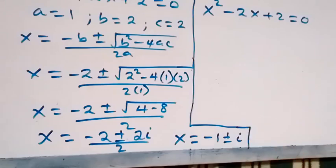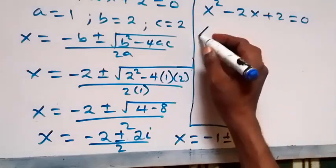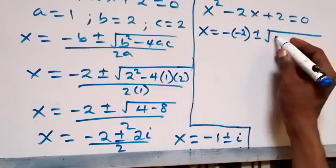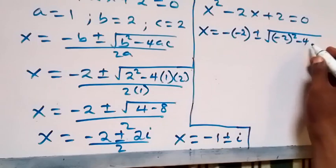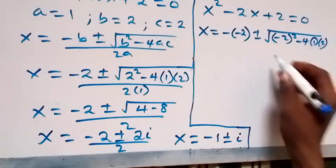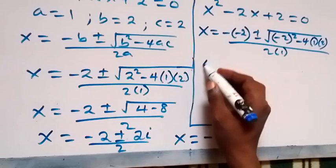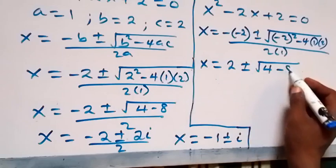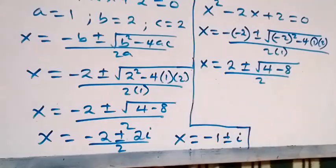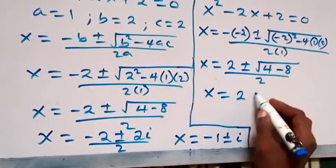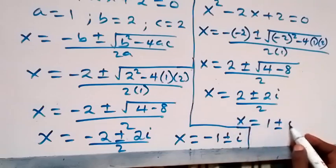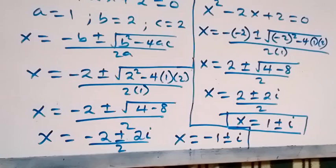On the other side, solving the second equation: x equals minus minus 2 plus or minus square root of minus 2 squared minus 4 times 1 times 2, divided by 2 times 1. So x equals 2 plus or minus square root of 4 minus 8, over 2. Since 4 minus 8 is minus 4, that's 2i. So x equals 2 plus or minus 2i over 2, giving x equals 1 plus or minus i — another two solutions.